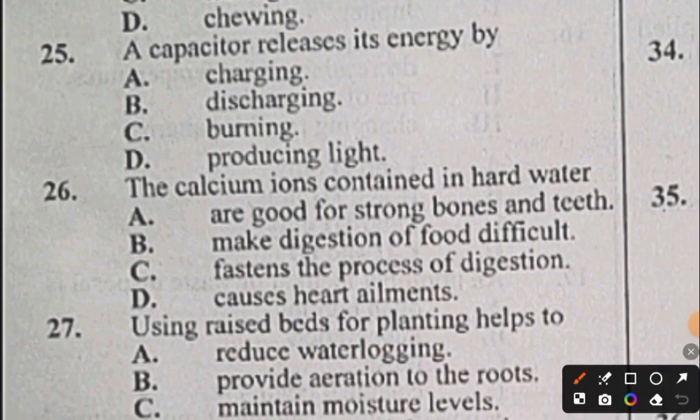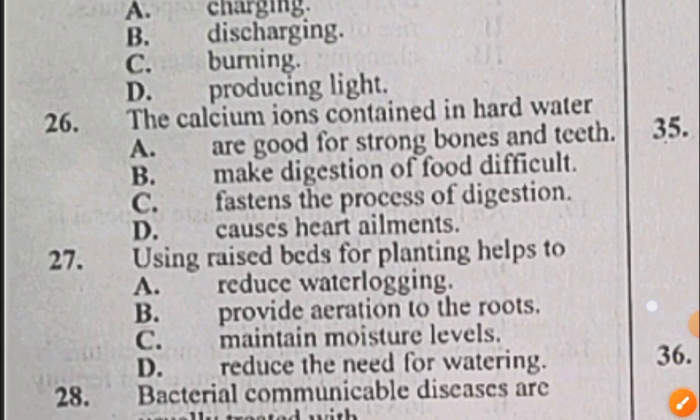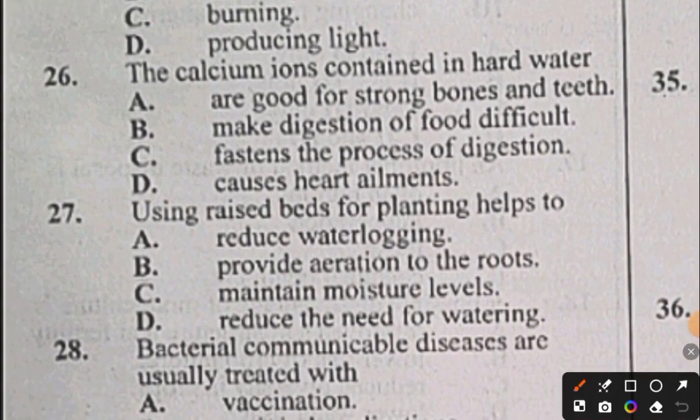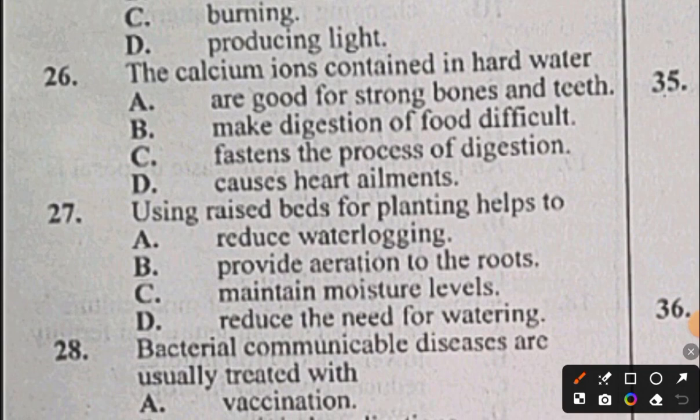Question 26: The calcium ions contained in hard water: A) are good for strong bones and teeth, B) make digestion of food difficult, C) hasten the process of digestion, D) cause heart ailments. The answer to question 26 is A. Question 27: Using raised beds for planting helps to: A) reduce water logging, B) provide aeration to the roots, C) maintain moisture levels, D) reduce the need for watering. The answer to question 27 is A, reduce water logging.